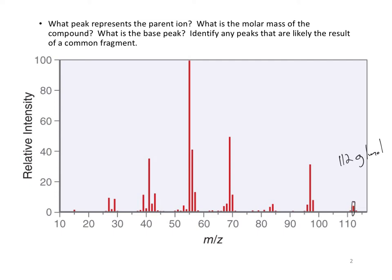So here I have a peak at 95, 96, that looks like 97. And so when I do 112 minus 97, I get 15. And so this peak is likely due to the loss of a methyl.